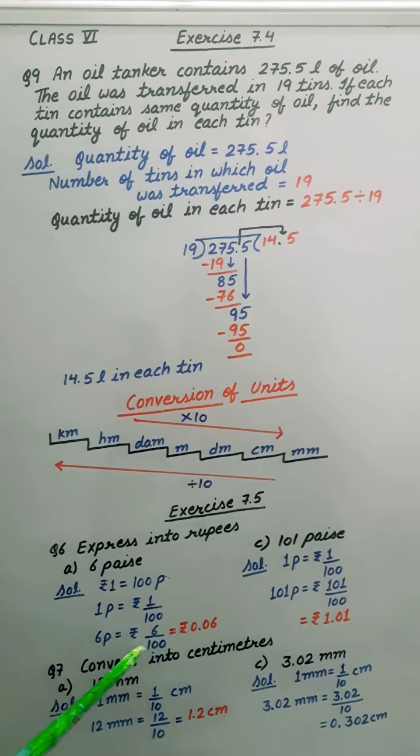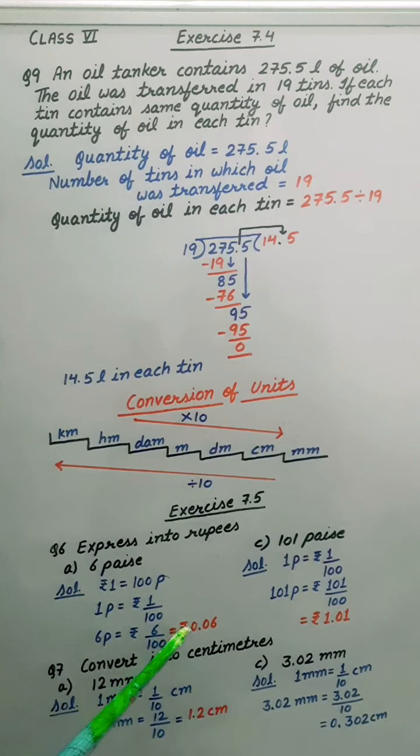Because we have 2 zeros down, we have to count 2 digits and put decimal. So answer is rupees 0.06.